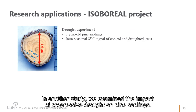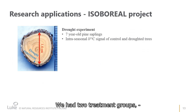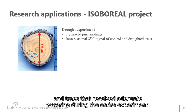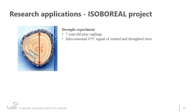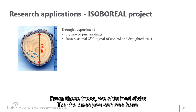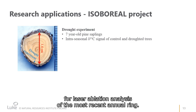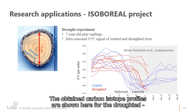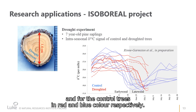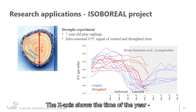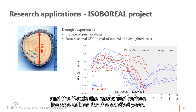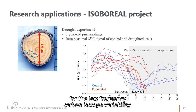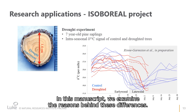In another study, we examined the impact of progressive drought on pine saplings. We had two treatment groups: trees affected by drought that were subsequently re-watered, and trees that received adequate watering during the entire experiment. From these trees we obtained disks, and from these disks we selected cross sections for laser ablation analysis of the most recent annual ring. The obtained carbon isotope profiles are shown for the droughted and control trees in red and blue respectively. The x-axis shows the time of year and the y-axis shows the measured carbon isotope values. Between the two treatments, clear differences were observed in the low-frequency carbon isotope variability, and we examined the reasons behind these differences in the manuscript.